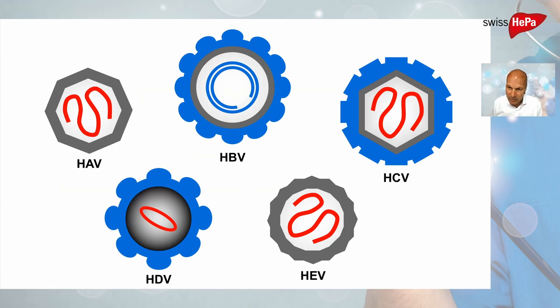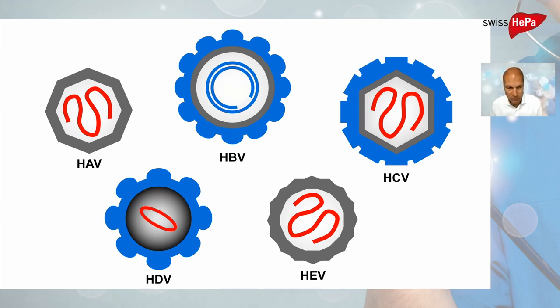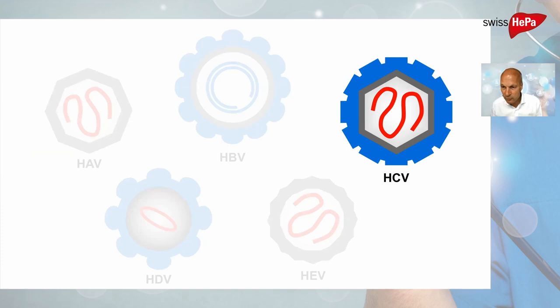The Hepatitis C virus, illustrated schematically on this slide, is one of the five viruses that primarily infects the liver and causes acute and/or chronic hepatitis. The others are the two enterally transmitted viruses, Hepatitis A and E virus, and then the three parenterally transmitted viruses, Hepatitis B, C and D or delta virus. Today we will concentrate on the Hepatitis C virus.